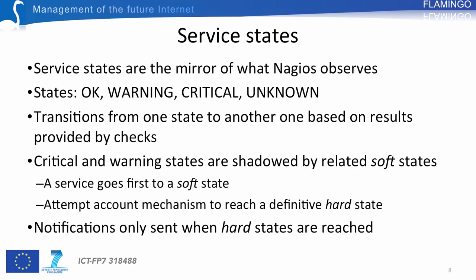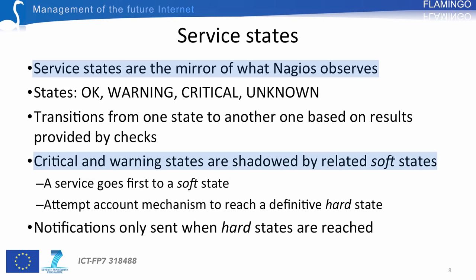The states of services are the mirror of what Nagios observes. There are four main states for a service: OK, Warning, Critical, and Unknown. Transitions from one state to another are triggered by the results provided by checks. In the case of Critical and Warning states, the states are shadowed by related sub-states.